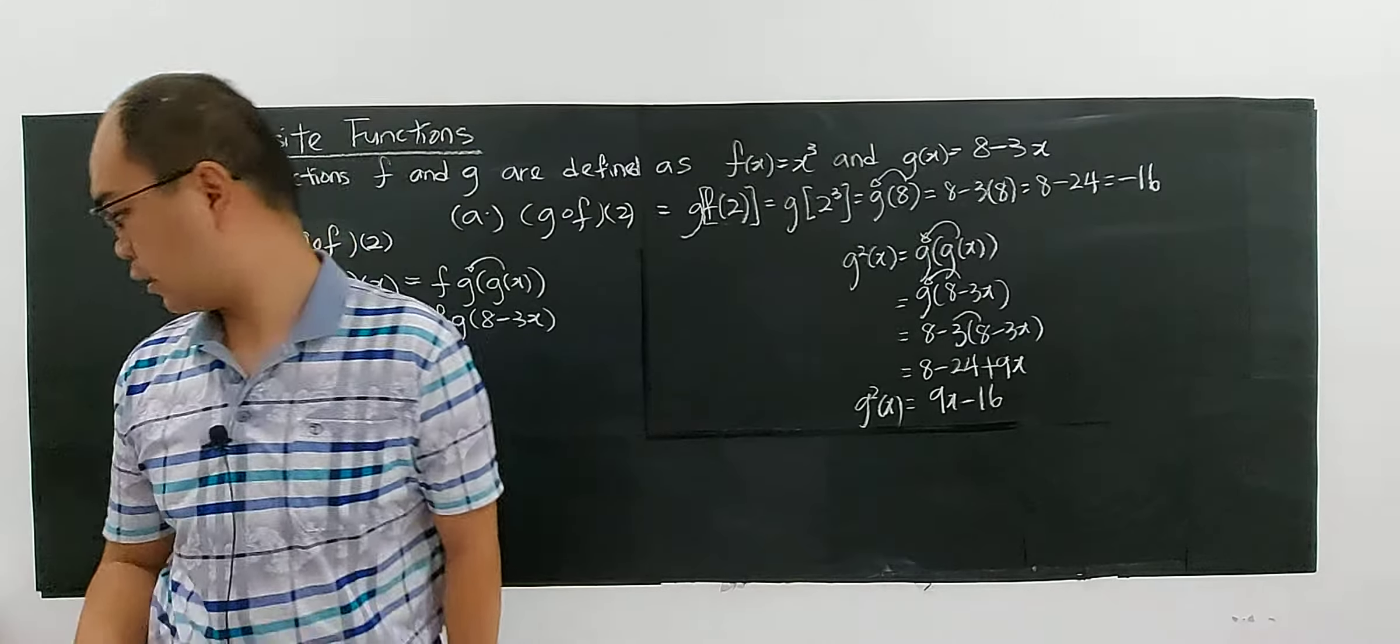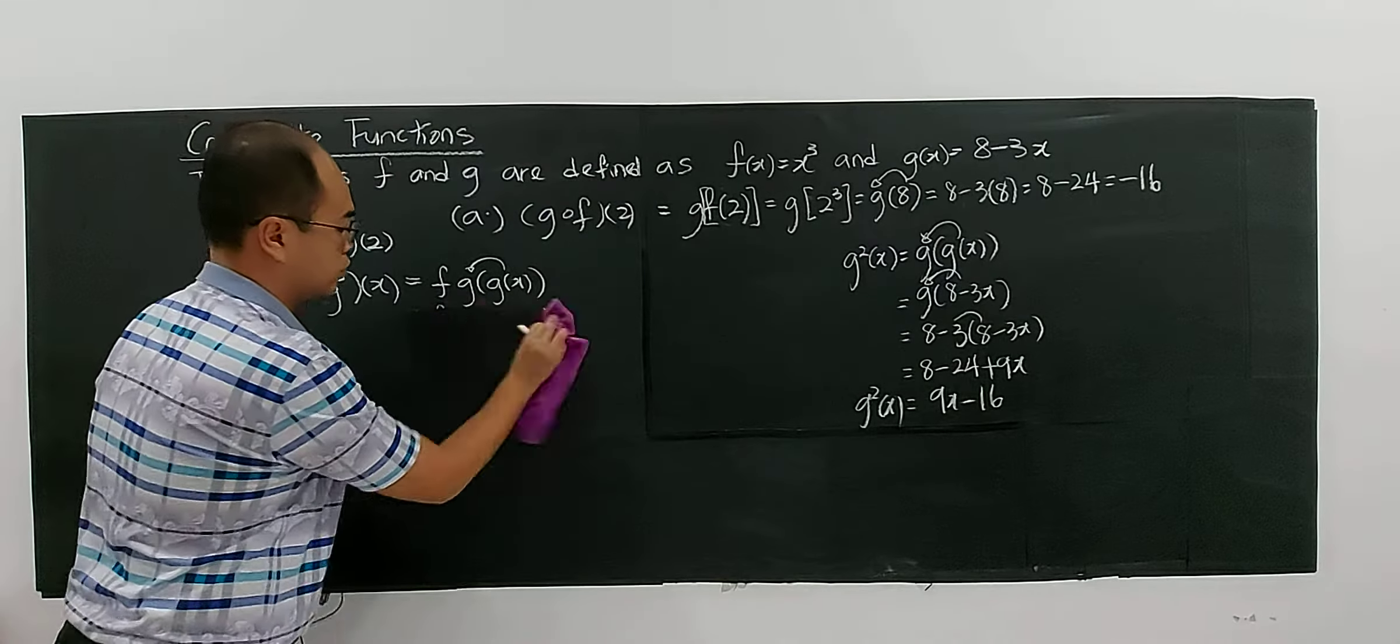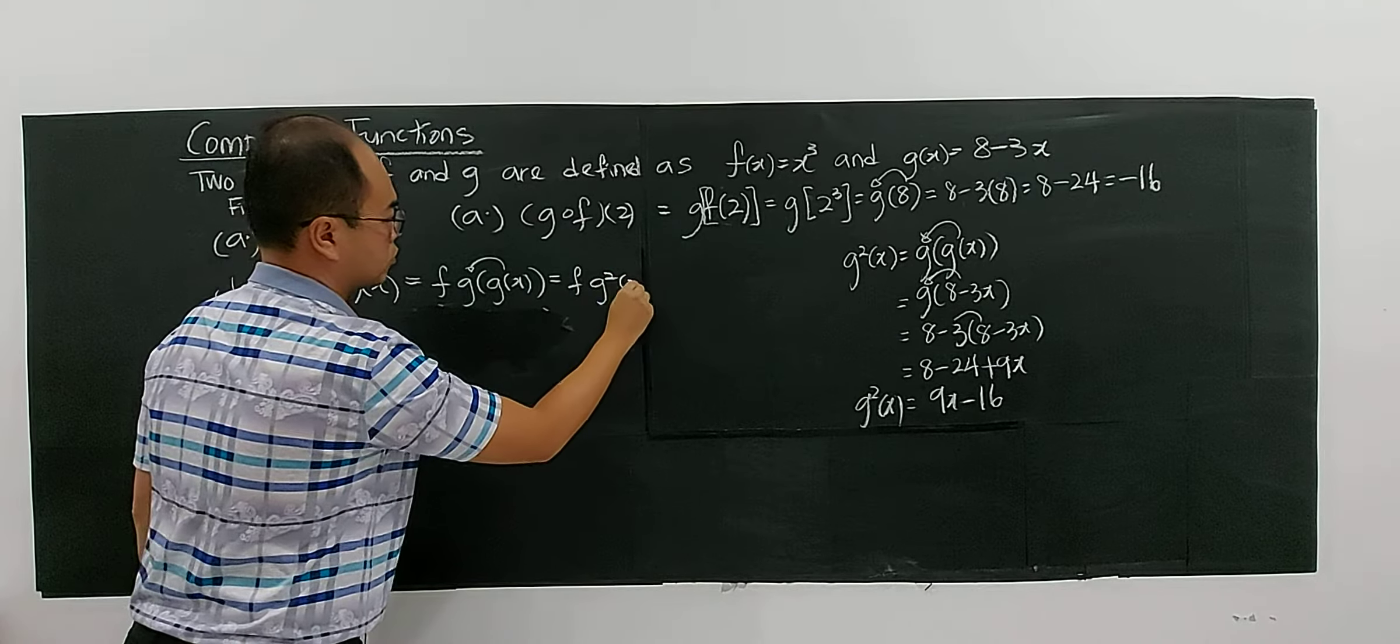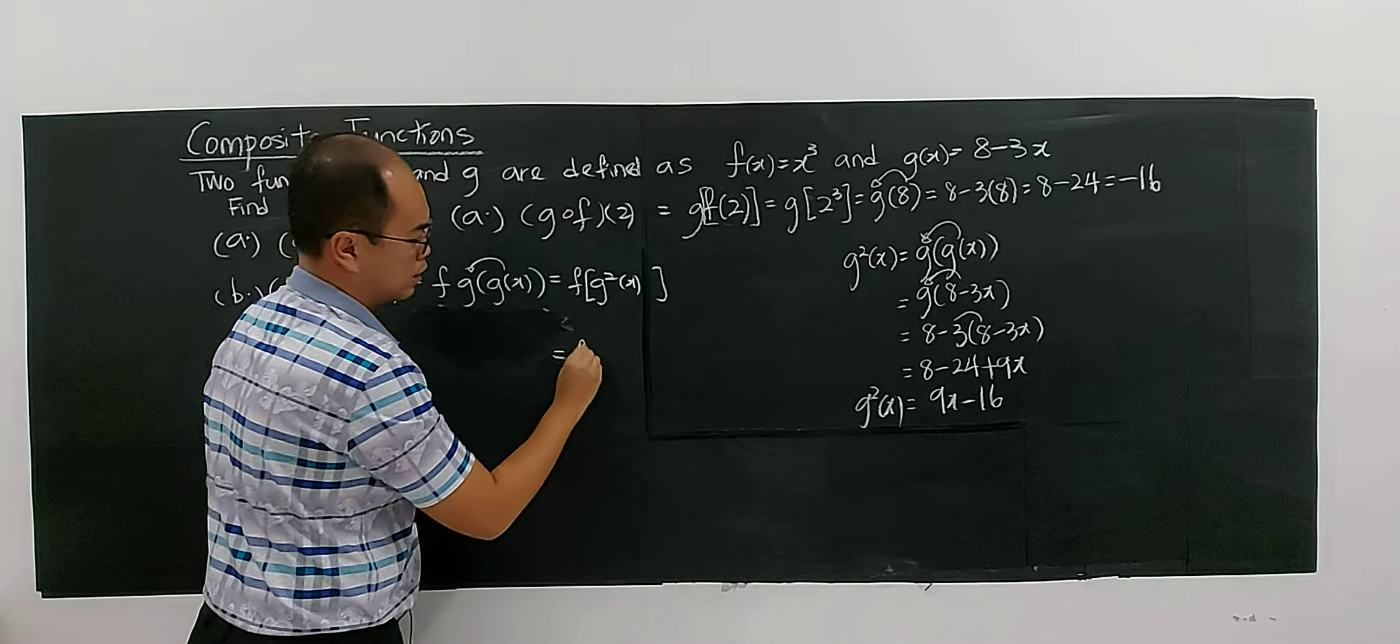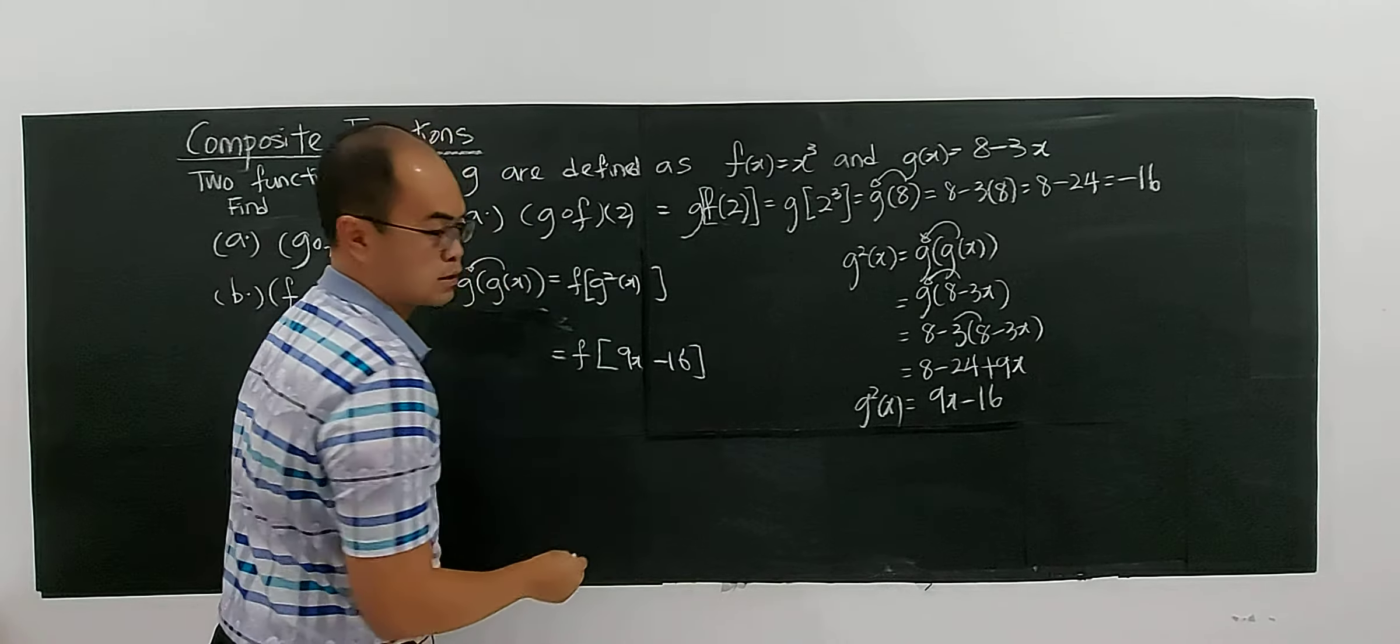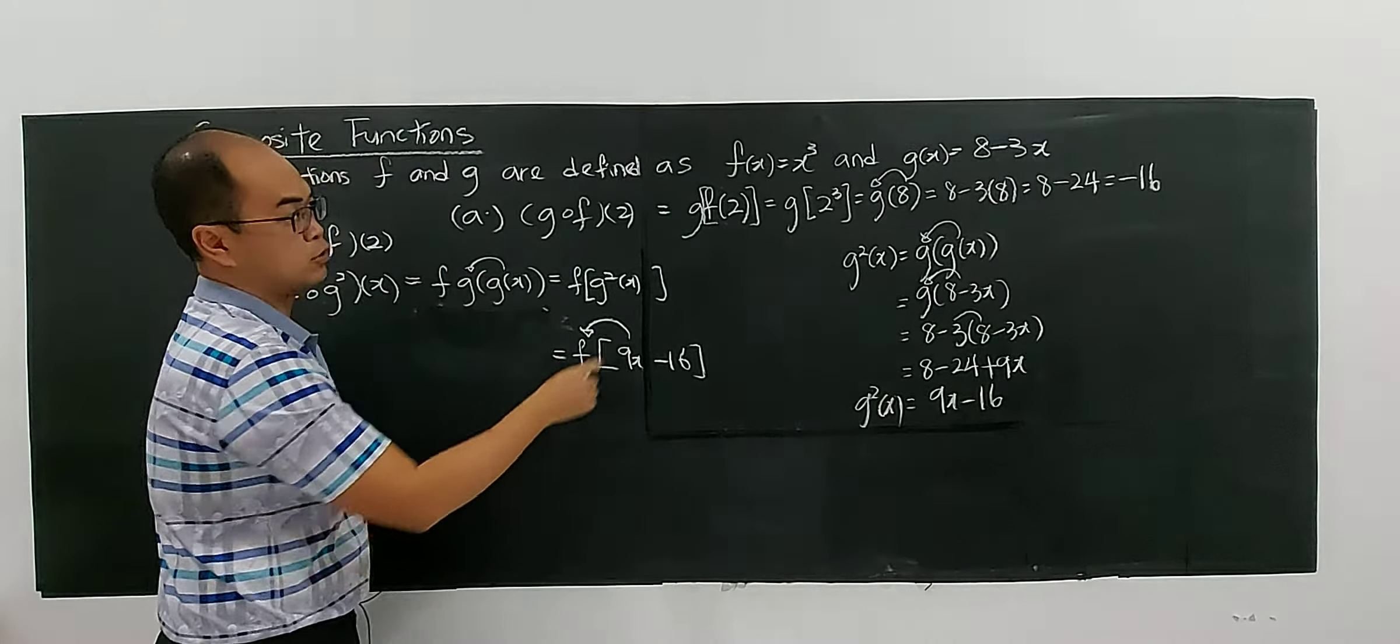And now, in this case, I'm going to rewrite this as f∘g²(x). I have separately found that g²(x) will be 9x - 16. And all this, you're going to use as an input to function f.